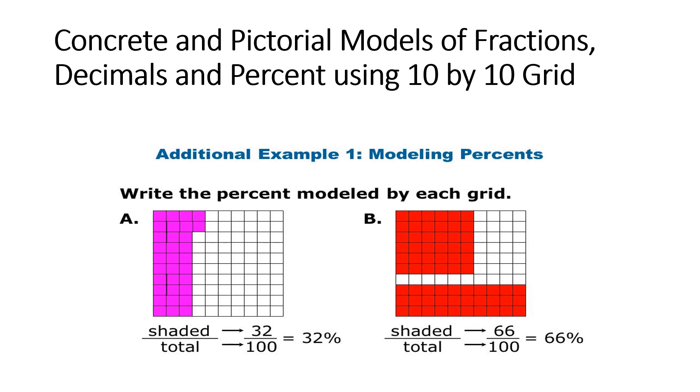When solving problems given a 10 by 10 grid and we want to write the percent modeled by each grid, we must remember that it's parts over whole or shaded over total. And this would equal 32 over 100 for question A. 32 over 100 will represent 32 percent is shaded. Now when we look at the other grid, we have 66 shaded over 100. This would represent 66 percent.